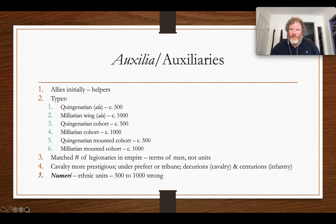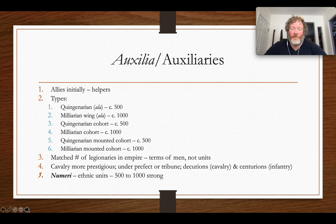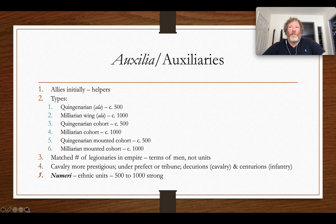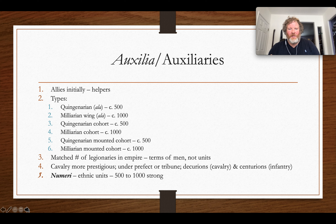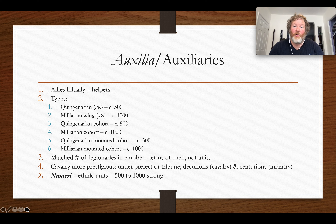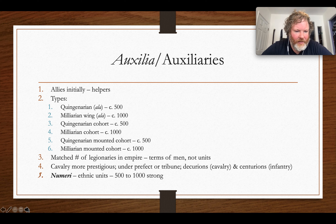The only other thing I'll say about all these numbers is that these are called paper strengths. What that means is this is how many soldiers they should have — this is the capacity per unit — but that doesn't mean this is necessarily the number of soldiers they did have, because of new recruits, deaths, injuries, and whatever other possibilities. They were probably never quite at that level, and these are things we'll get into in another way.